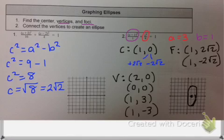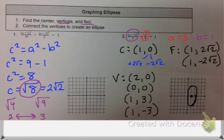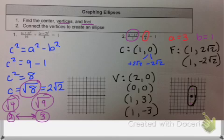To place those foci on the graph, I know that the square root of 4 is 2 and the square root of 9 is 3, so the square root of 8 is going to be somewhere between 2 and 3. So I start at my center and move up about 2 and a half and place it there, and down about 2 and a half and place it there. For the foci, it doesn't need to be exact because most of the time they will have radicals, but it should be between the correct two perfect squares, and you can estimate using perfect squares that you know.